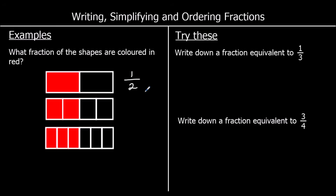For the second one, the same rectangle has been cut into four pieces, and two are red. So two out of four — and that's two quarters. We can say that one half and two quarters are equivalent. They both represent half of the total shape. If you had half of a cake or two quarters of a cake, you have the same amount of cake — it's just been cut into a different number of pieces.